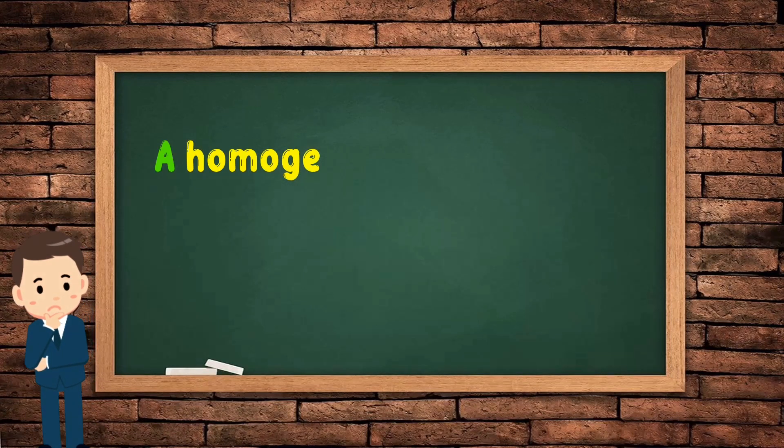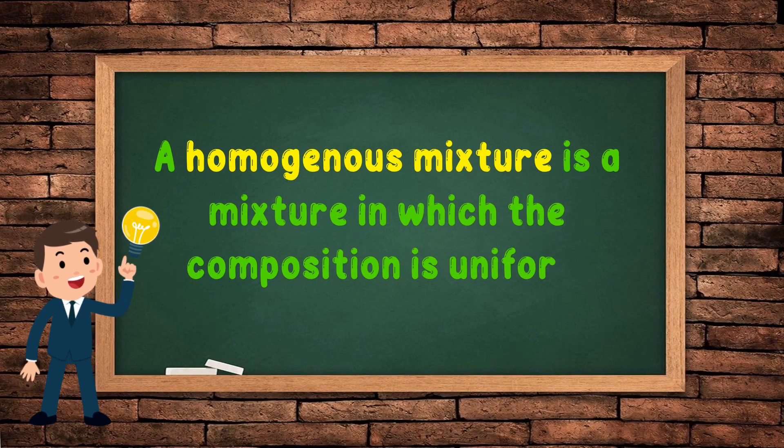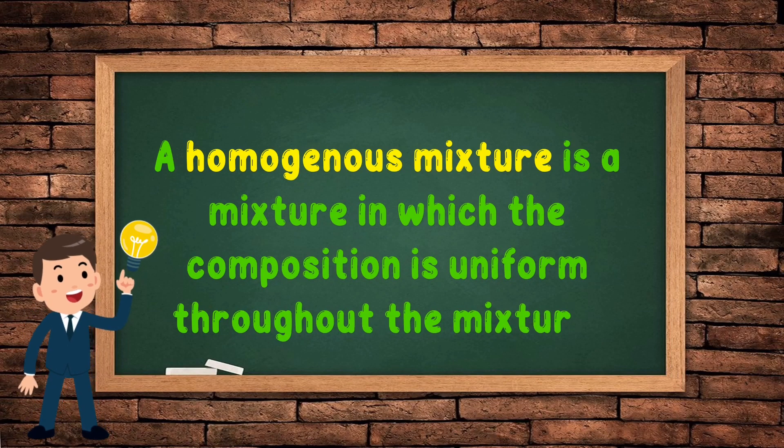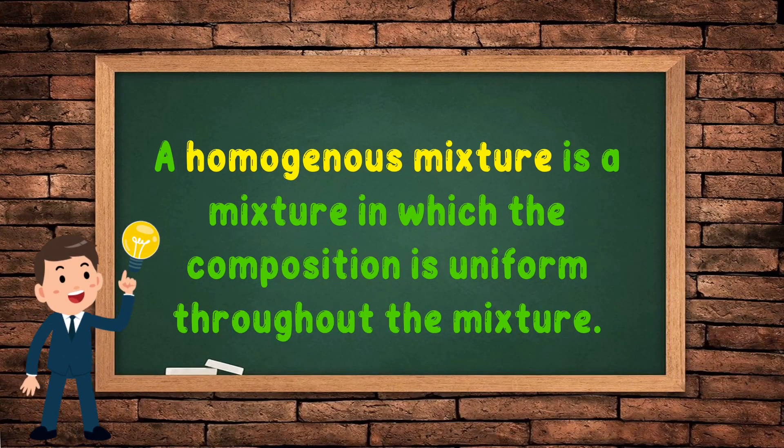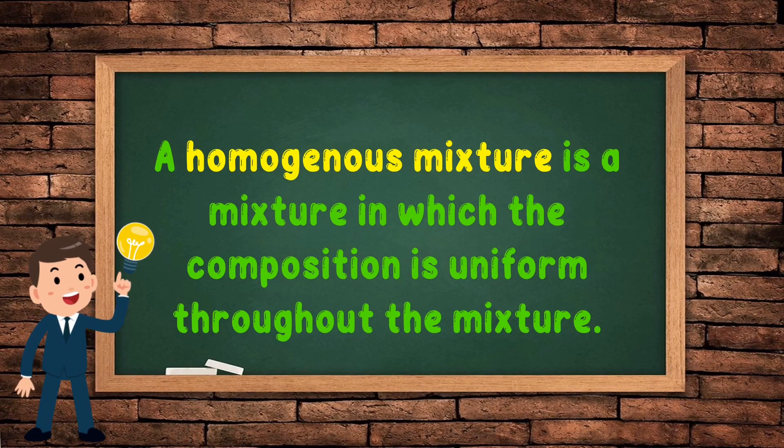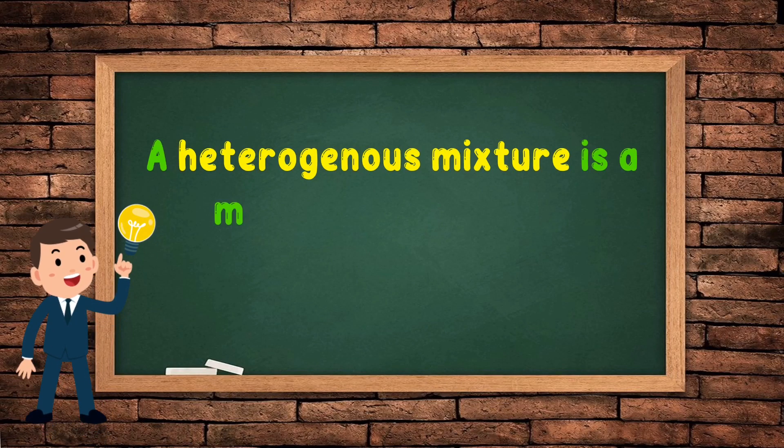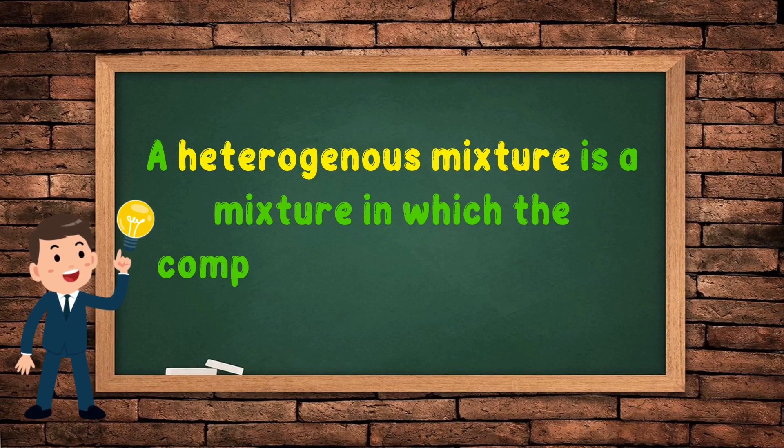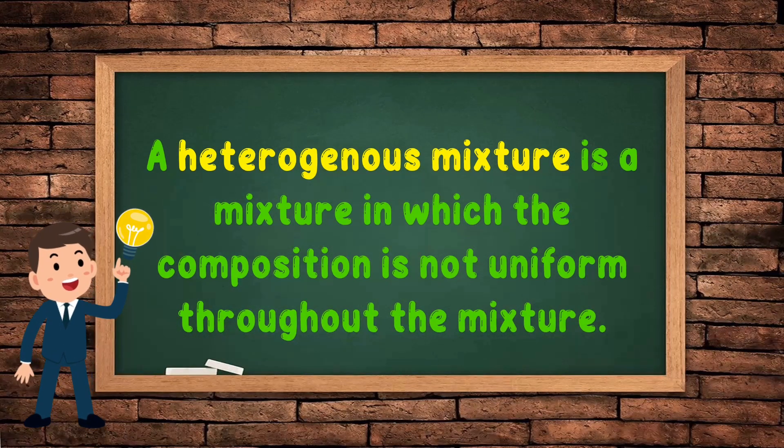A homogeneous mixture is a mixture in which the composition is uniform throughout the mixture. While a heterogeneous mixture is a mixture in which the composition is not uniform throughout the mixture.